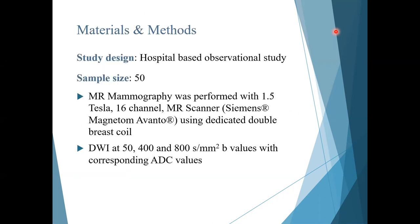This study was a hospital-based observational study performed in 50 patients. It was performed on a 1.5 Tesla MR machine using a dedicated double-breast coil. DWI sequences were taken at b-values of 50, 400, and 800 seconds per millimeter squared, and ADC mapping was done.